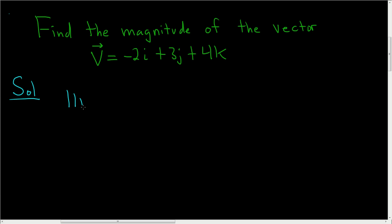So the magnitude of this vector v is going to be the square root. And to work this out, all we have to do is square the negative 2, then add, square the 3, then add, and then just square the 4.